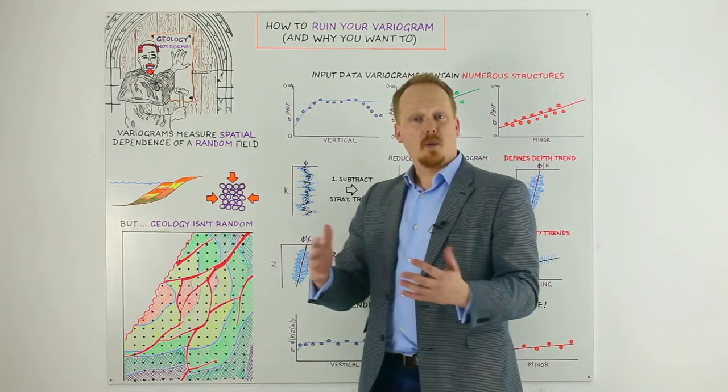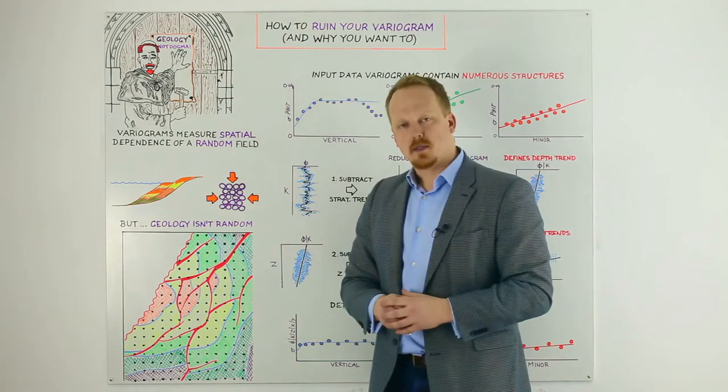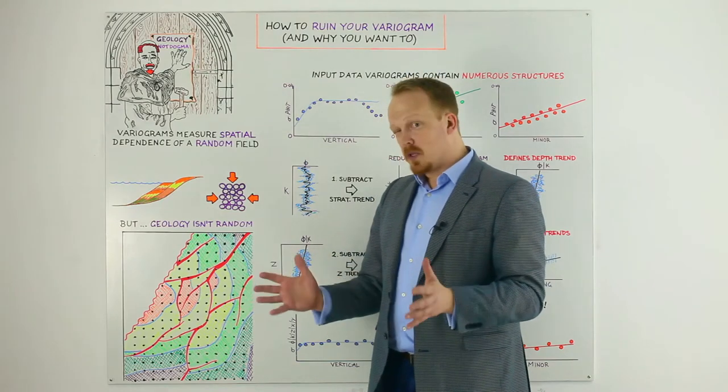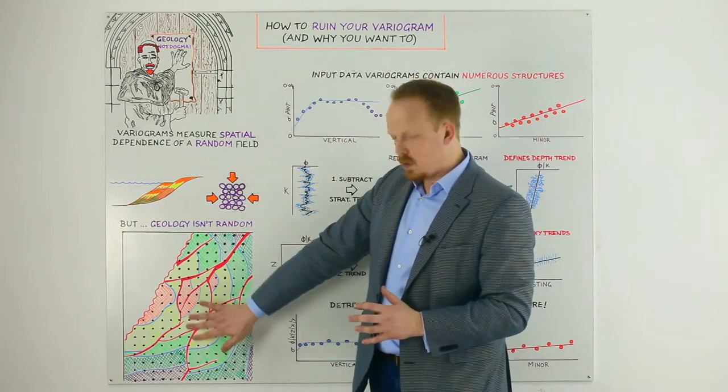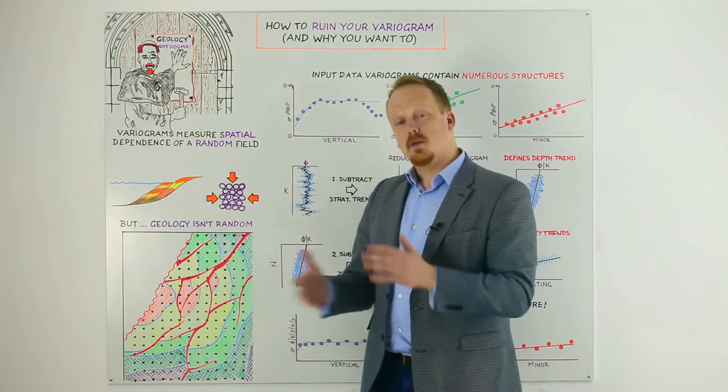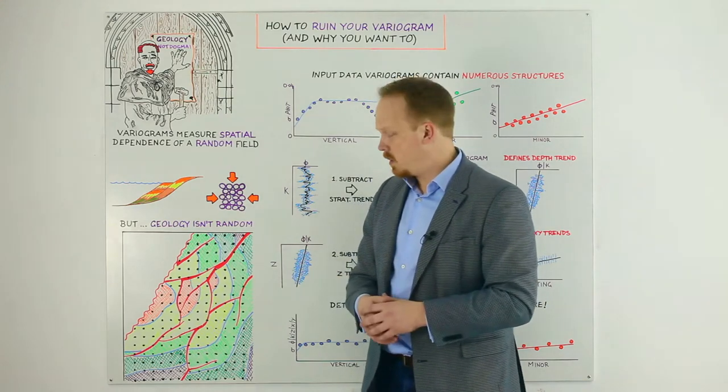We have some very complex sequence cyclicity of fining upwards and coarsening upwards trends, and we've overprinted this with a burial trend. And what we want to do is see how we go about representing that with this perfectly pattern-drilled data set, either with trends or with variogram analyses and determine which one we think is better.